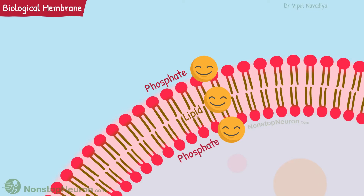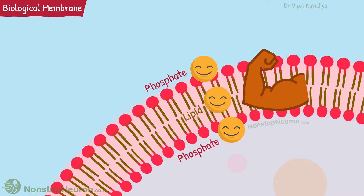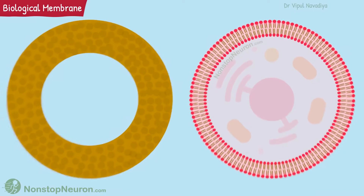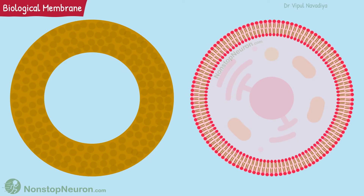This smart choice of lipids and their orientation makes the membrane a more stable structure. However, in a broad sense, it's still just a sphere of lipid similar to the one that we created.